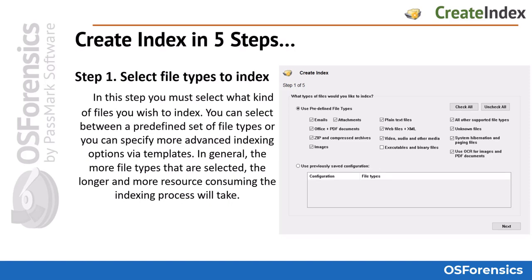Creating an index is a five-step process via the Create Index module. In step one, you will select the types of files you would like to index, or simply leave all checked to index everything. If you saved indexing configurations from a previously built index, you could also choose them from the saved configurations menu.